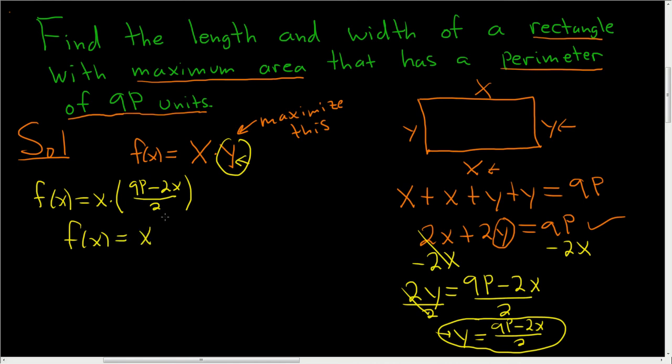So continuing to simplify, we get 9p over 2 times x minus x squared. And again, the goal is to maximize this. We want to make this as big as possible.